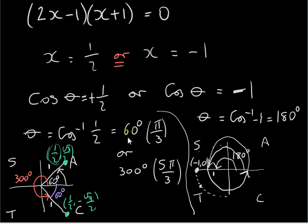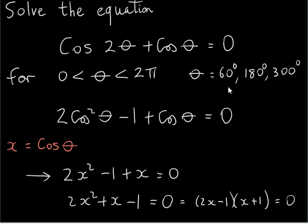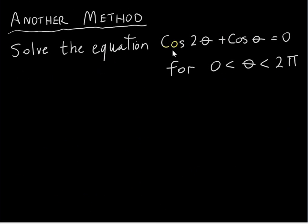So we found three solutions to the original equation: 60 degrees, 300 degrees, and 180 degrees. If you had time, you could plug each of these back into the equation and check that you get 0. Now here's another method for solving this equation. We see that this equation is the sum of two cosine functions, and we can look up an identity for cos A + cos B.